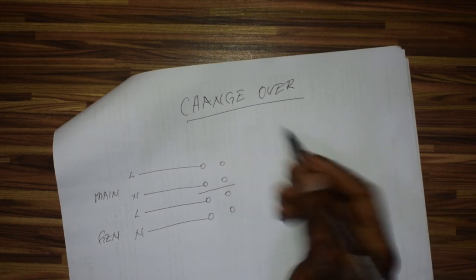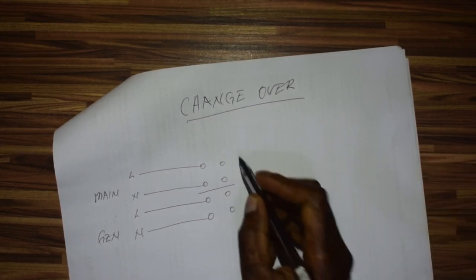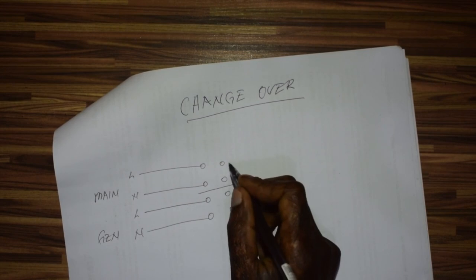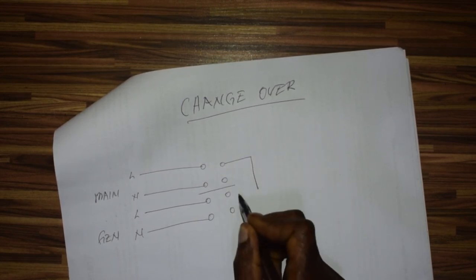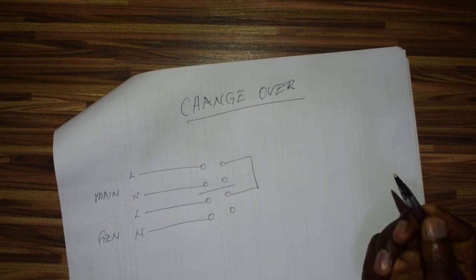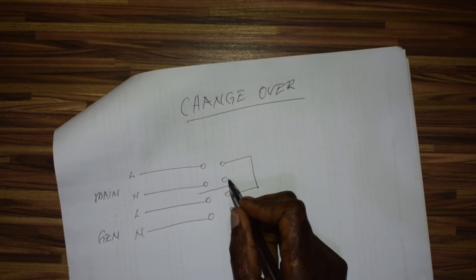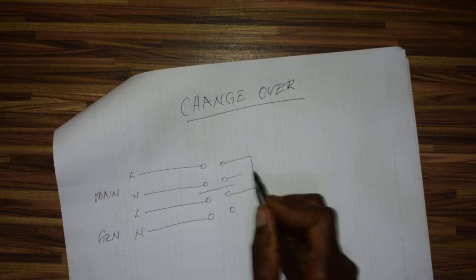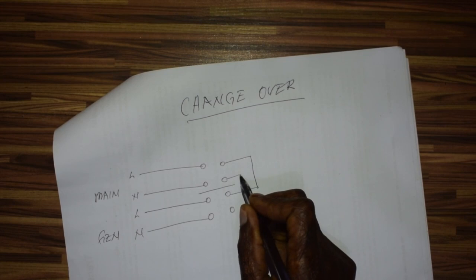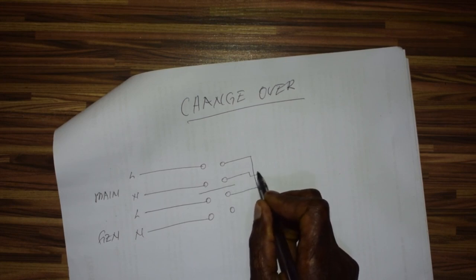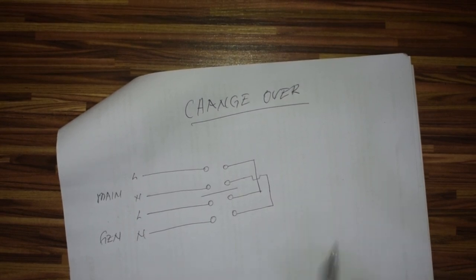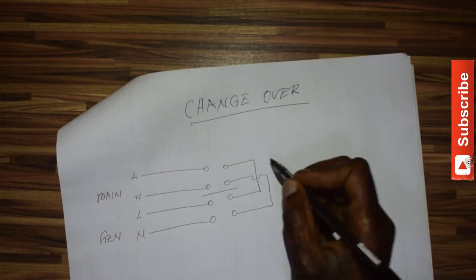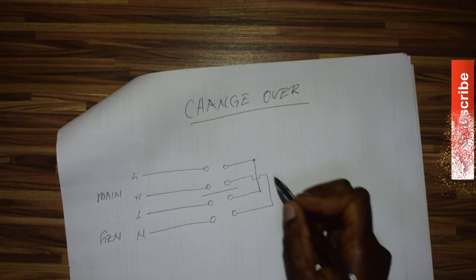This now is our load. The L will come and connect with the L of the gen, and the neutral of the main will come and connect with the neutral of the gen. This way we'll get our load here - this one becomes L for live and N for neutral.